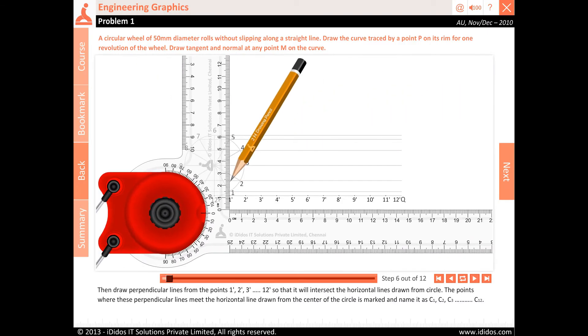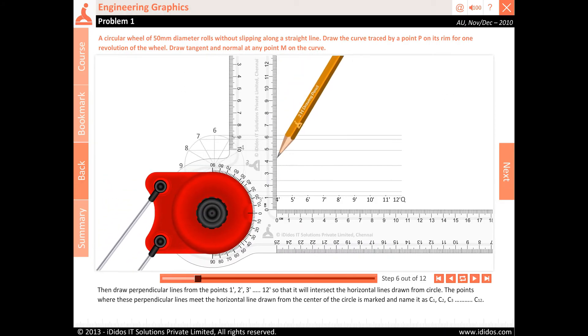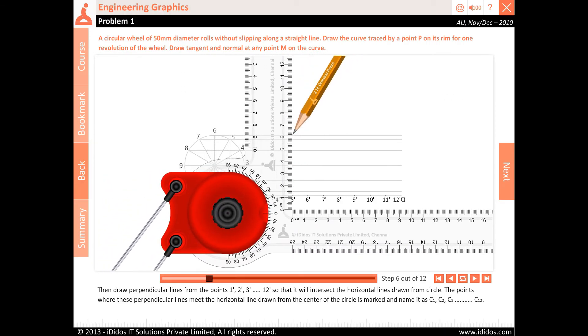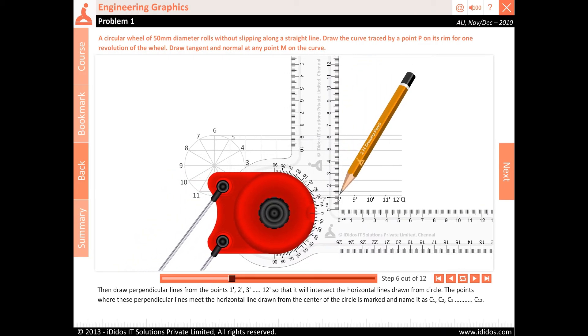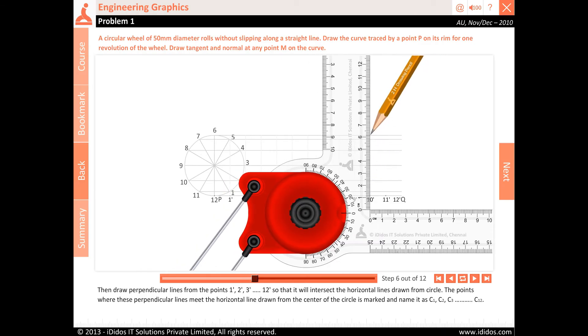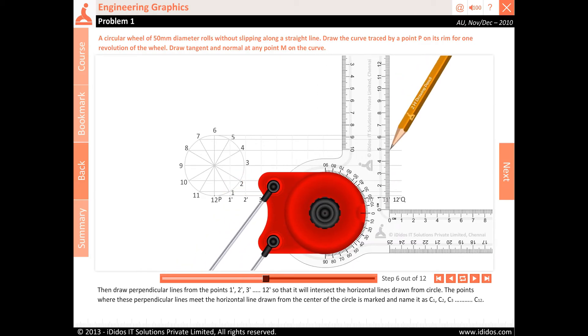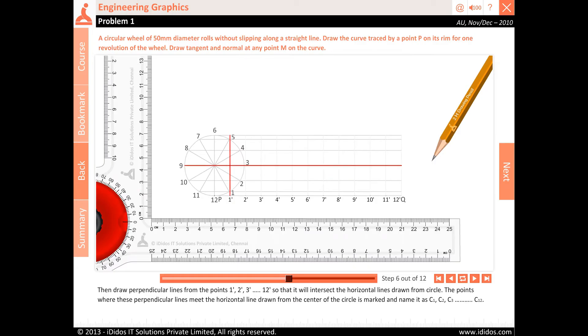Then draw perpendicular lines from points 1, 2, 3, 4, 5, 6, 7, 8, 9, 10, 11, and 12 so that it will intersect the horizontal lines drawn from the circle.